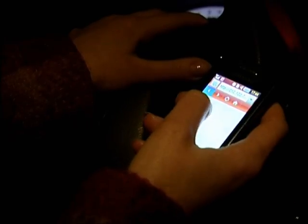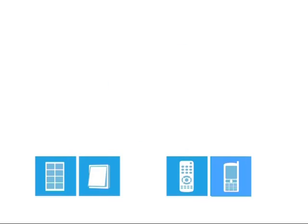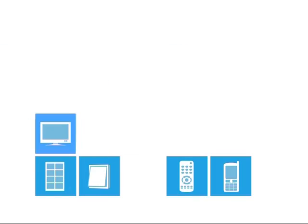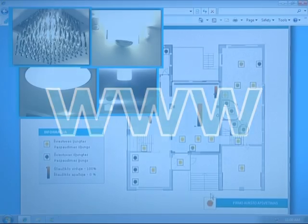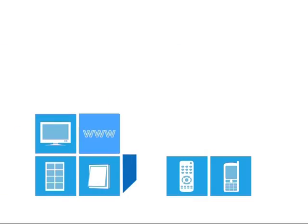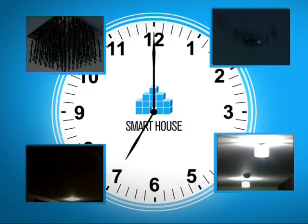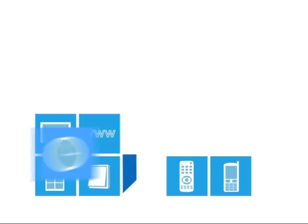Thus, the smart housing system offers more beauty and comfort for your home. The light is switched on and adjusted in different ways. Lighting can light up automatically as well as pre-timed.